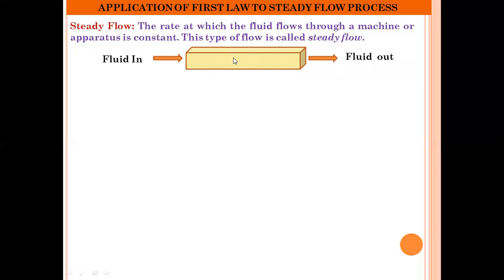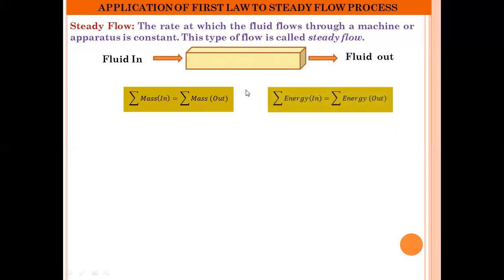In the steady flow process, the total mass of the fluid entering into the system should be equal to the total mass of the fluid leaving out of the system, and the total amount of energy flowing into the system should be equal to the total amount of energy flowing out of the system. When we consider the steady flow process for an open system, we have to assume certain things.